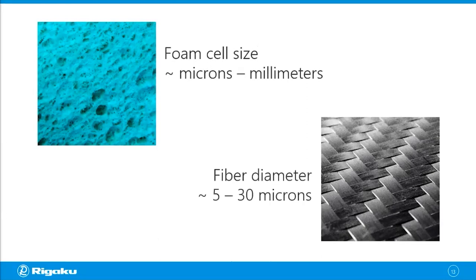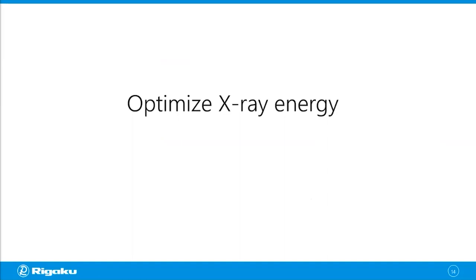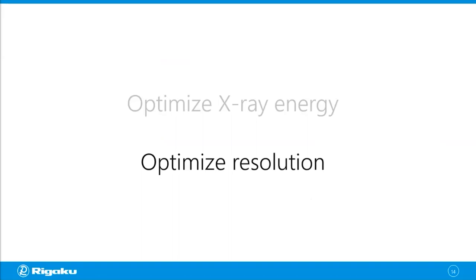To achieve high-quality X-ray CT imaging, you need to optimize the X-ray energy — which we talked about in the last webinar — and you also want to optimize the resolution, which is what we're going to talk about today. I say optimize the resolution, not use the highest resolution possible, because resolution is in a trade-off relationship with other things like X-ray intensity or scan time. You don't want to simply go for the highest resolution; you want to optimize it.